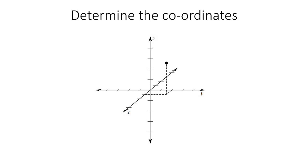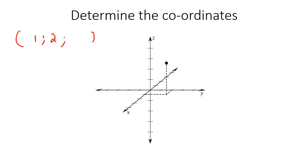Now they're going to give you the points and you need to determine the coordinates. It's always X first. Follow the dotted lines — they went one on X. Then for Y, they went all the way up to two. For Z, it's difficult to see, but looking at the unit distance: one, two, three — it's pretty much by the three. You might argue it's two, but if you carefully measure the unit distance it comes out to positive three.